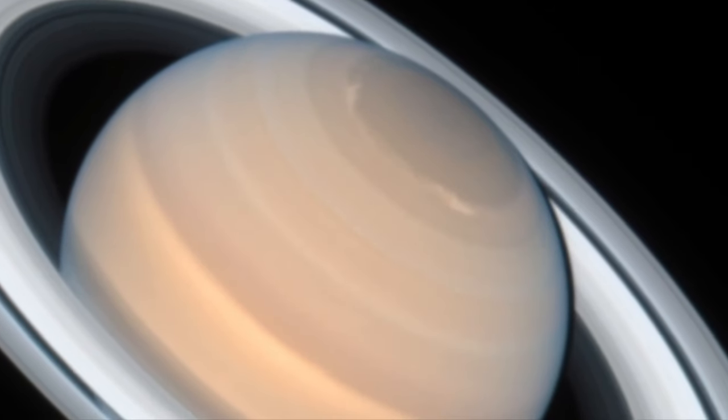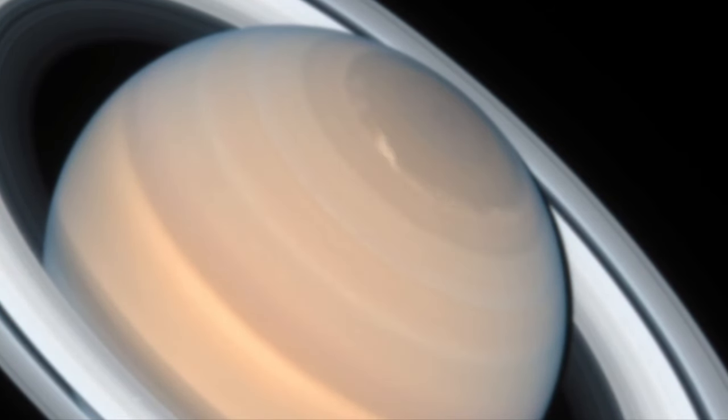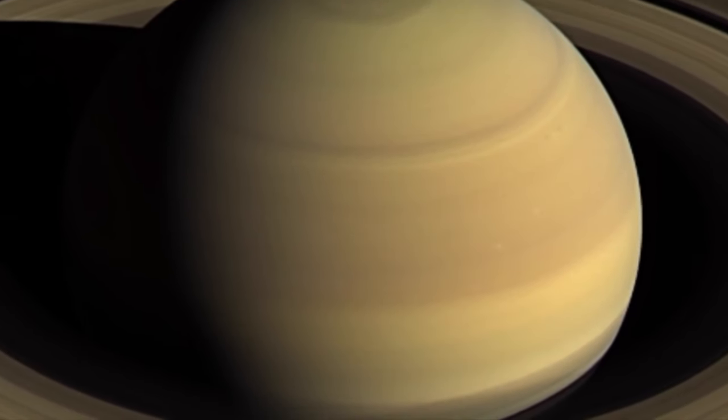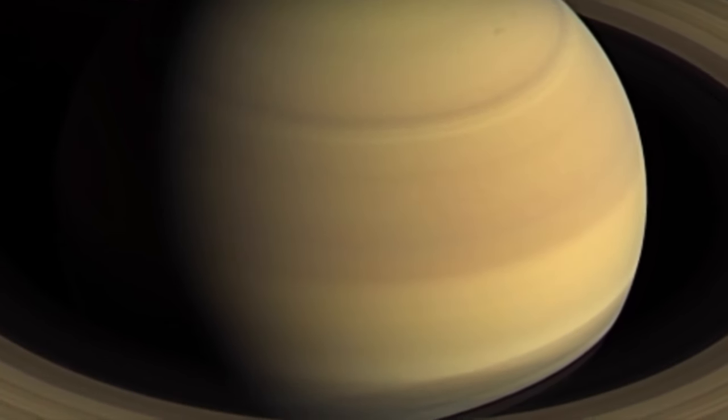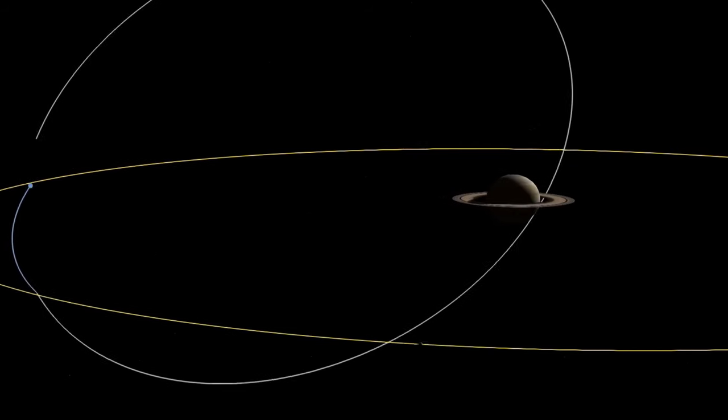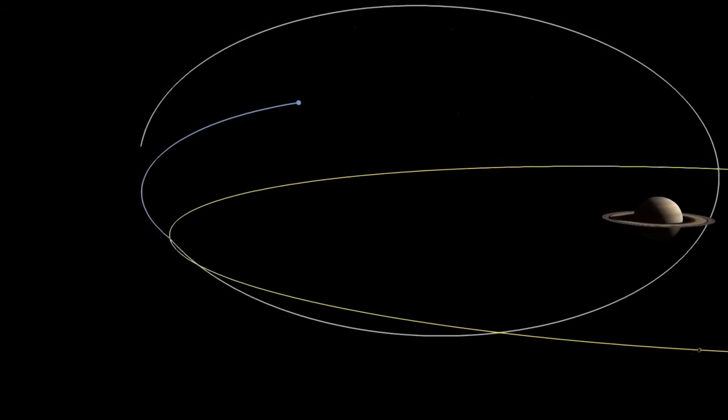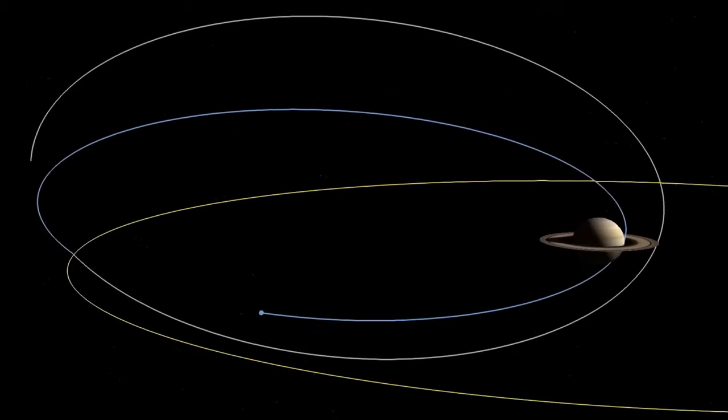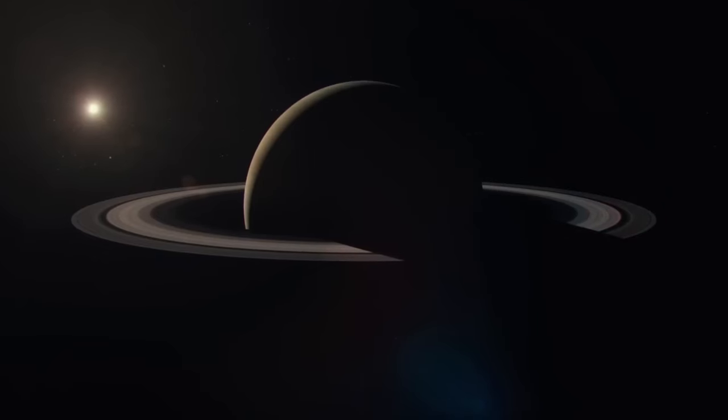This awe-inspiring hexagon seems almost artificial, with its striking transition from a blue shade to a golden hue. Within this hexagon, situated at Saturn's north pole, a massive hurricane thrives, dwarfing Earth's hurricanes by 50%.